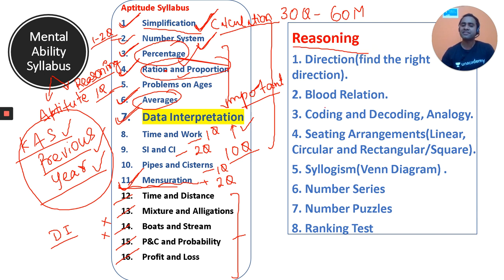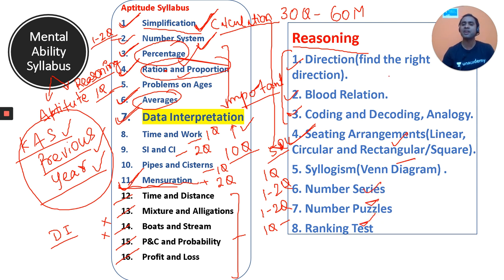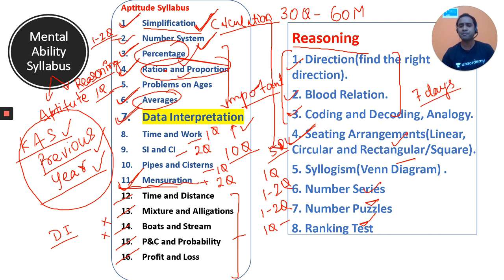Coming to reasoning: seating arrangement is very important — 5 questions will come from this topic alone. Syllogism gives 1–2 questions, number series 1–2 questions, number puzzles 1–2 questions, and ranking 1 question. Direction, blood relations, and coding-decoding are also important but slightly less so. Reasoning is easy in mental ability and can be completed in just 7 days.